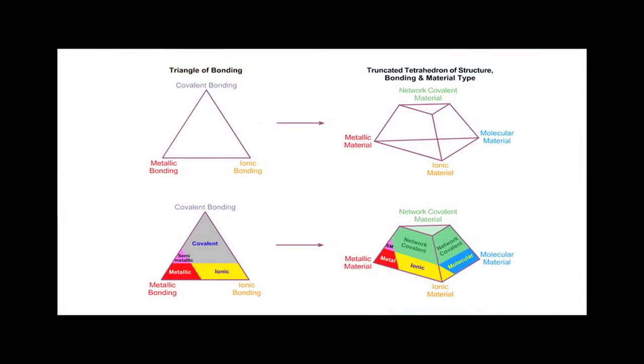But what about the network covalent material? The most electronegative element that forms covalent networks is carbon, and carbon has an electronegativity of 2.55. Therefore, a corner of the tetrahedron should be cut off at electronegativity of 2.55.